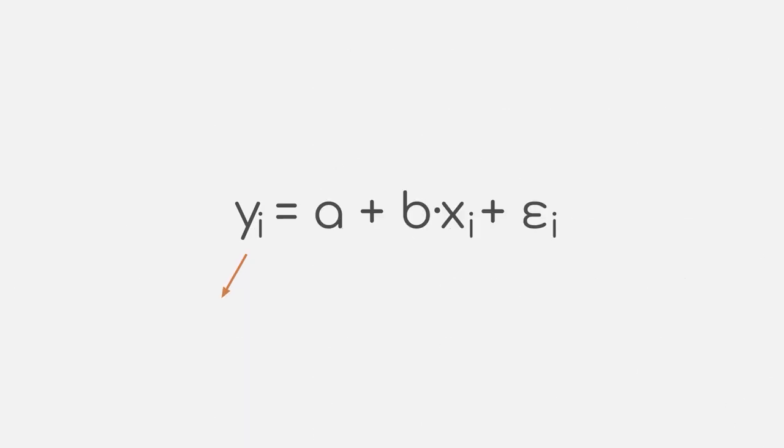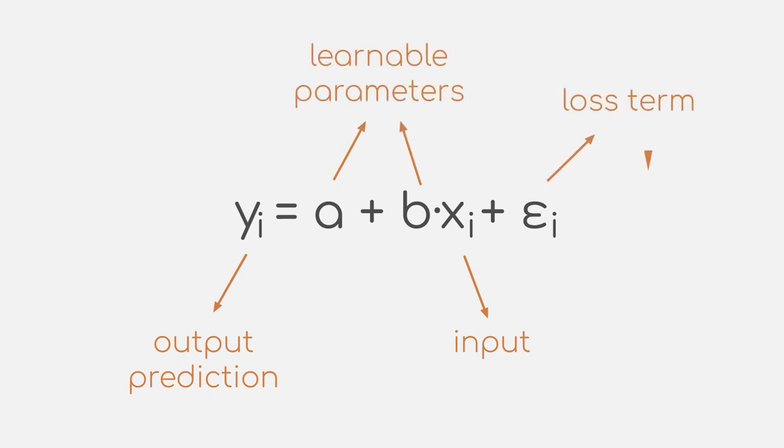So back to our regression problem. How does this method help us here? If you think back at our models, we have some learnable parameters of the function itself and a loss term at the end, the sum of squared errors. Depending on the choice of learnable parameters, our loss changes to the better or worse.